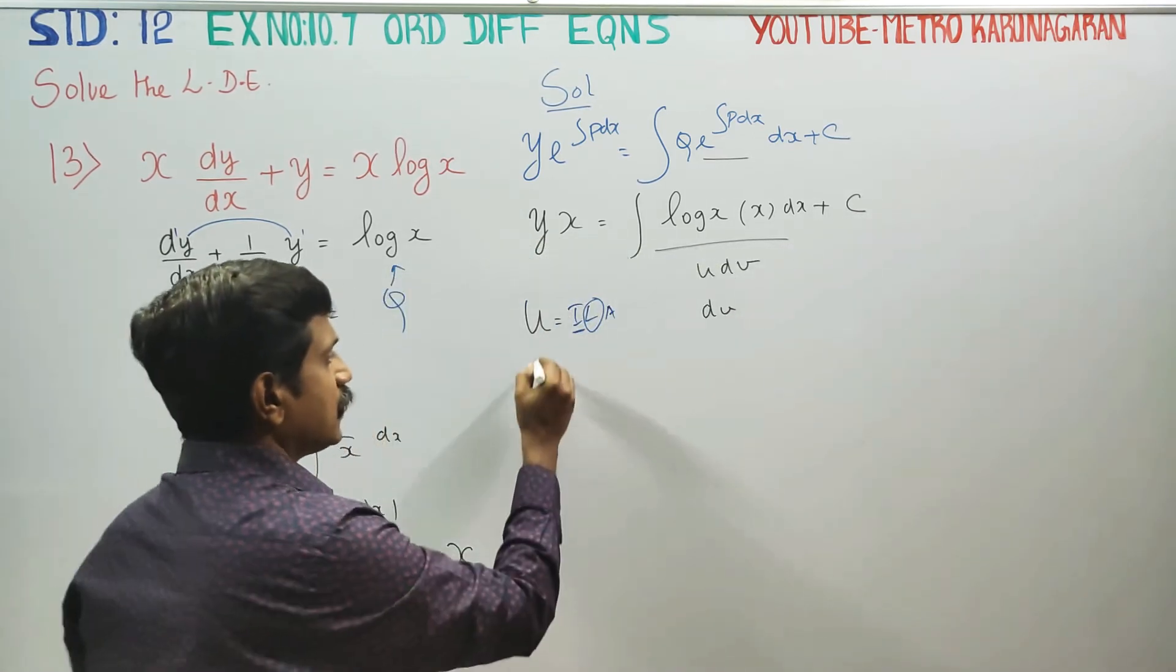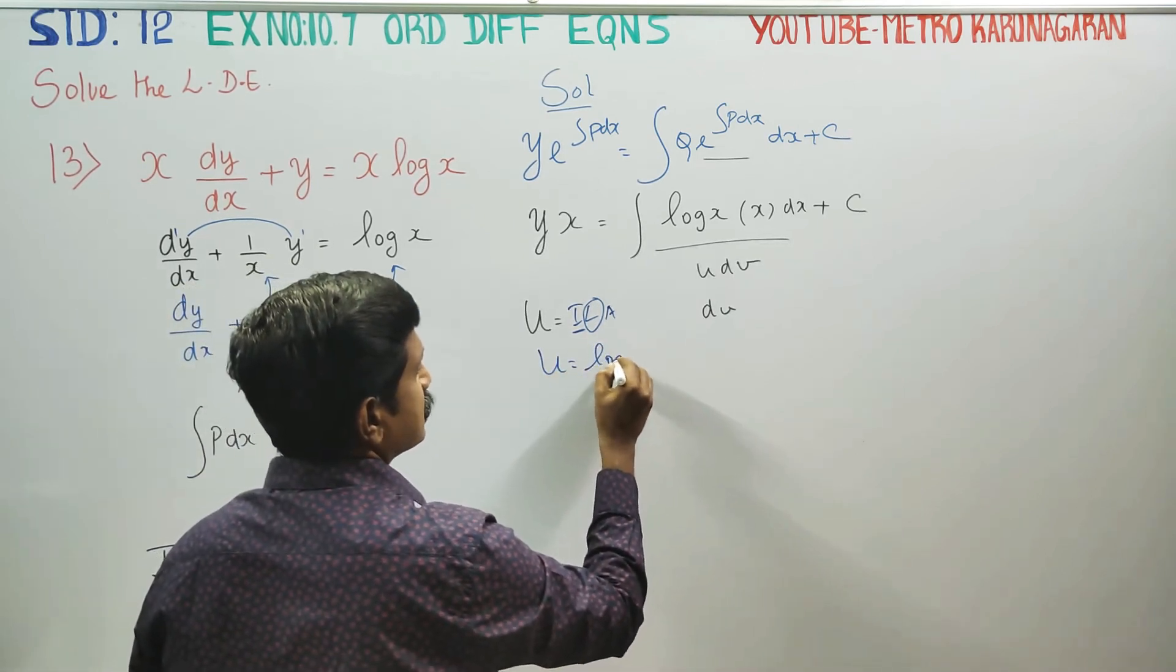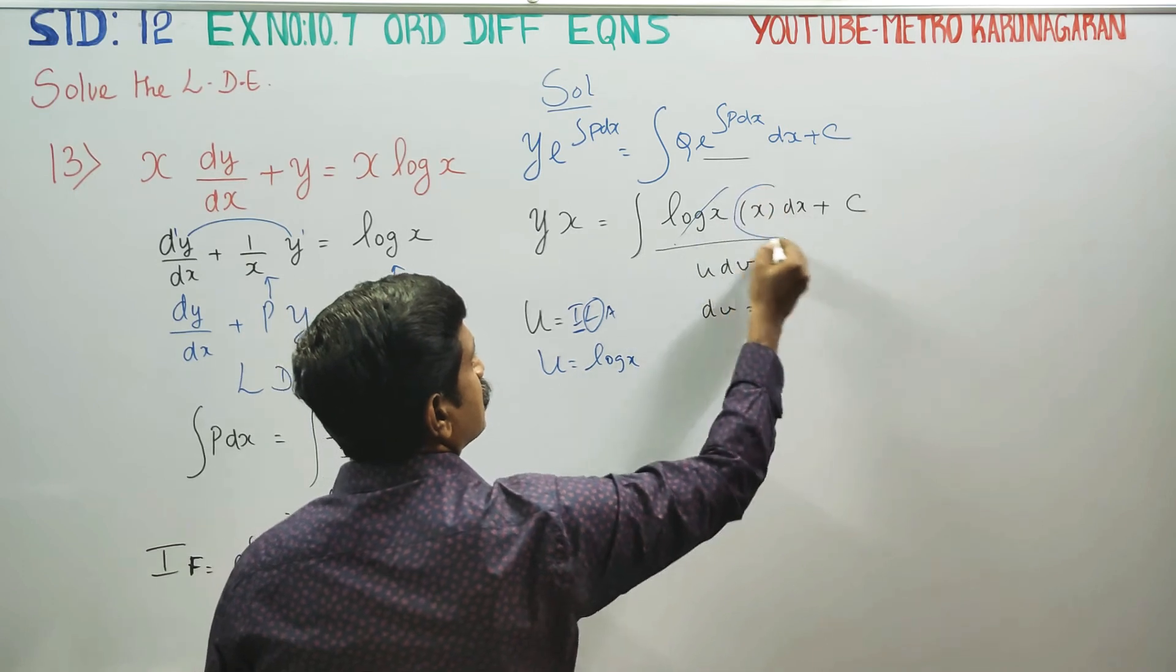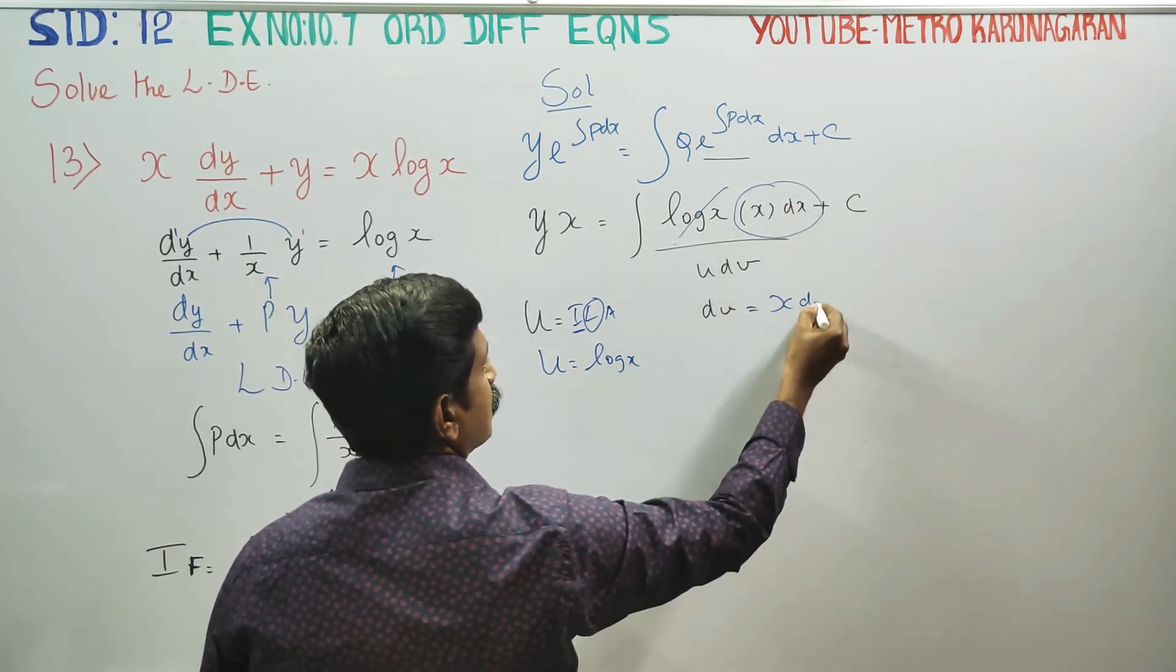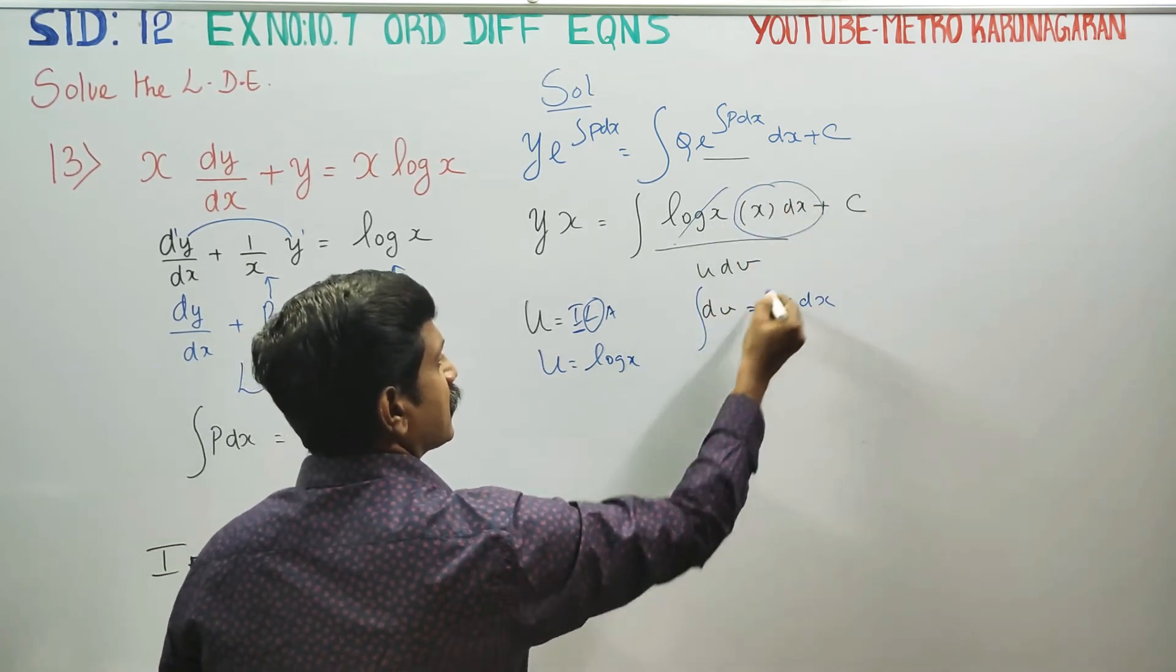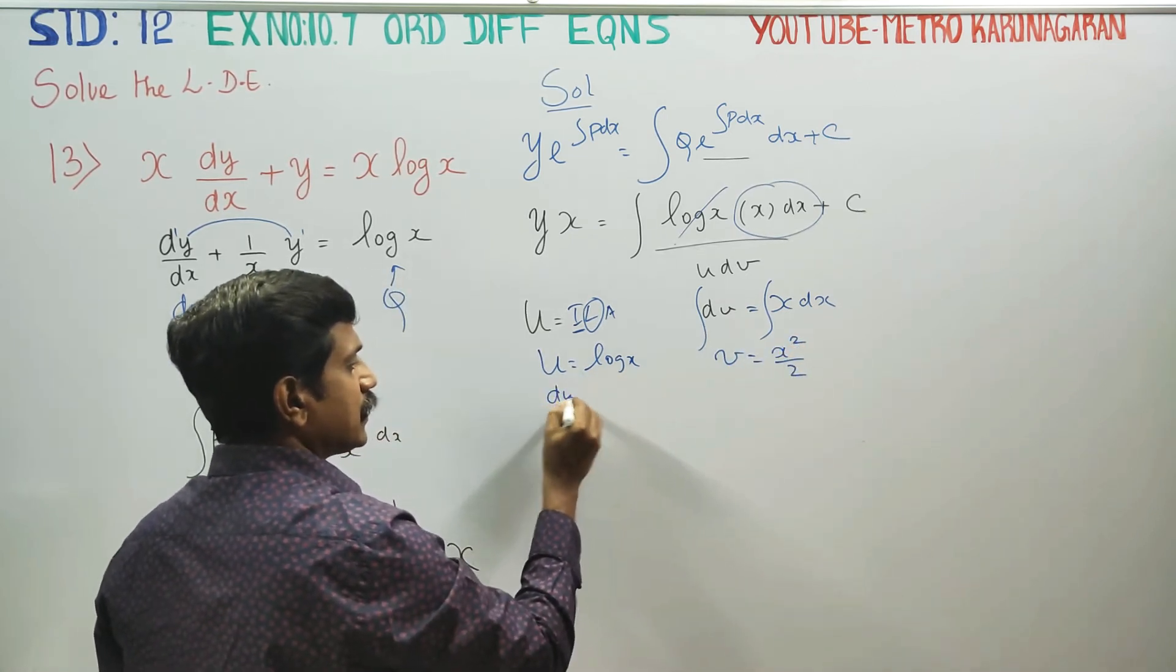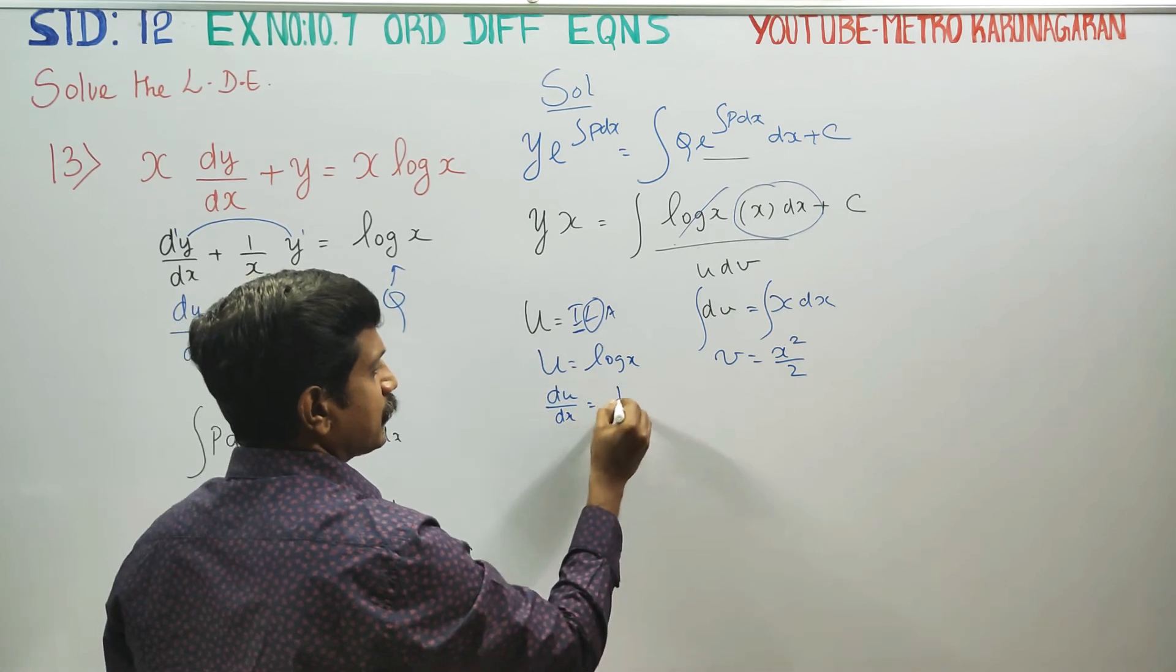Then dv is x dx. Integrate it: v equals x square by 2. Differentiate u: du by dx is 1 by x.